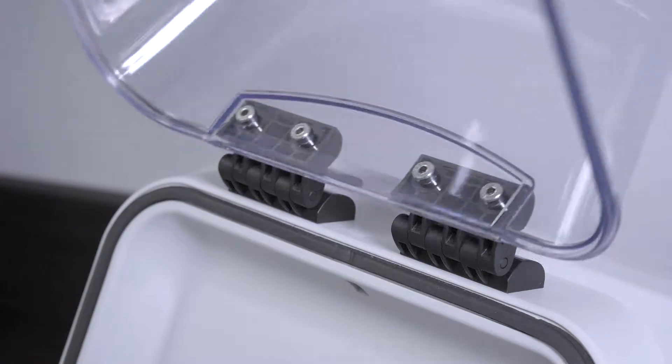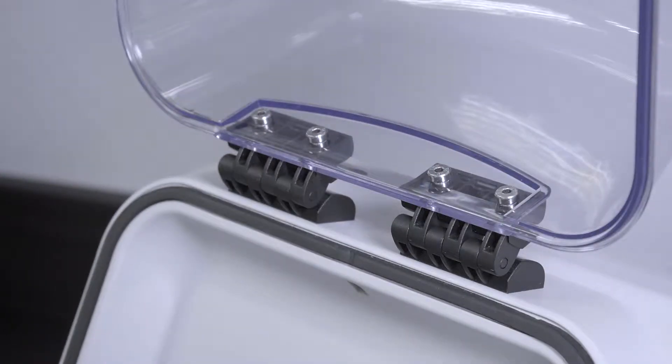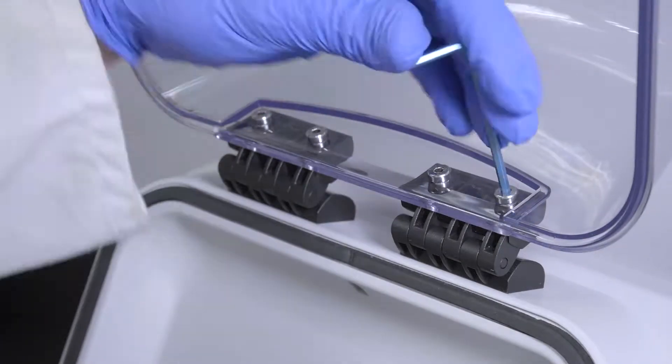To begin, lift the lid of your BeadRuptor homogenizer and use the provided Allen key to remove the four fastening screws.